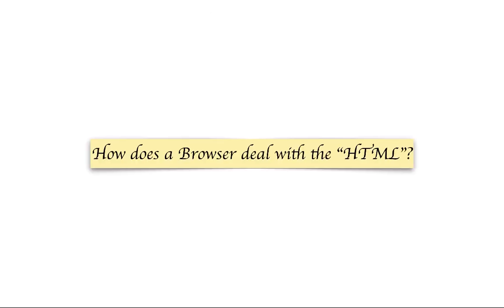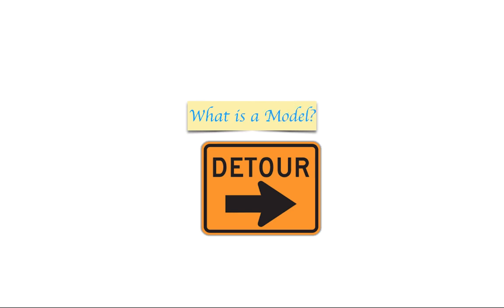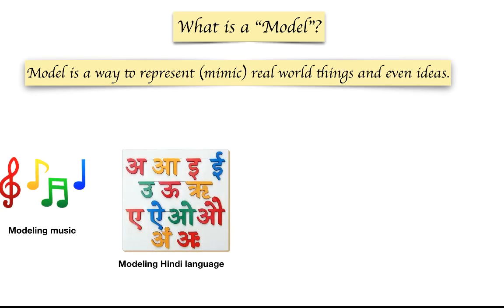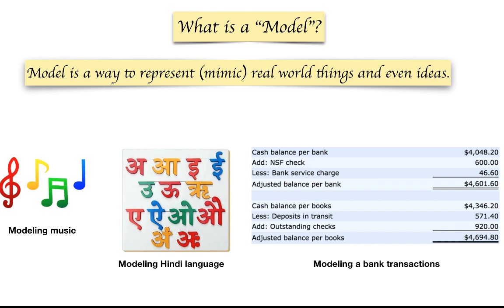Now, how does a browser actually deal with HTML? It uses something called the Document Object Model, or DOM. But first, what is a model? A model is a way to represent or mimic real-world things or ideas. We as humans have been modeling various things for centuries — for example, we model sounds we make as language characters and words, and we model currencies using numbers.